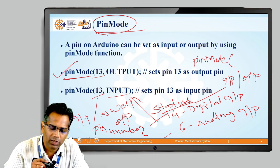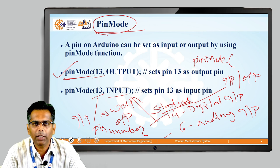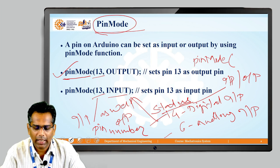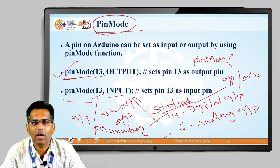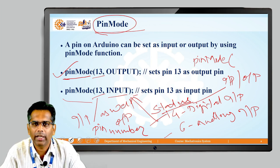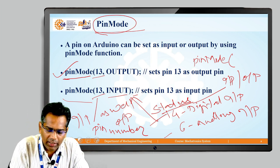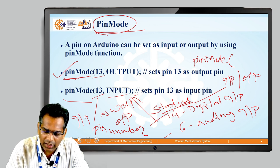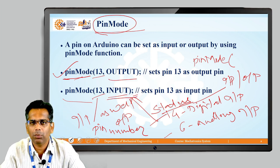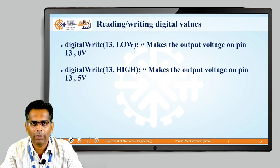For example: pinMode(13, OUTPUT) means pin number 13 works as an output. And pinMode(13, INPUT) followed by a semicolon means pin number 13 works as an input. Always remember it is case sensitive — the 'M' in Mode must be capital, and the status OUTPUT or INPUT must also be written in capital letters.